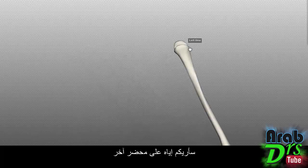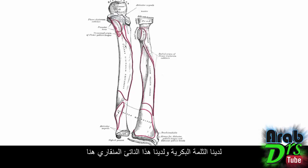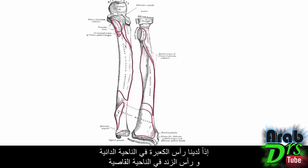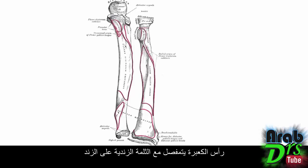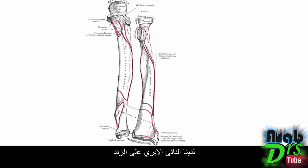Looking at an anterior view of the left radius and ulna, you can see the trochlear notch, the coronoid process, the olecranon superiorly, and the radial notch laterally articulating with the head of the radius. Then you've got the shaft and the ulnar head distally — the head of the radius is proximal while the head of the ulna is distal. The head of the ulna articulates with the ulnar notch on the radius, and there's also a styloid process on the ulna, just as there is on the radius.